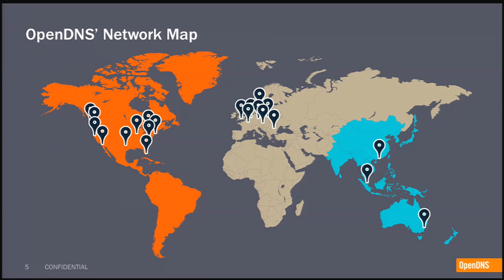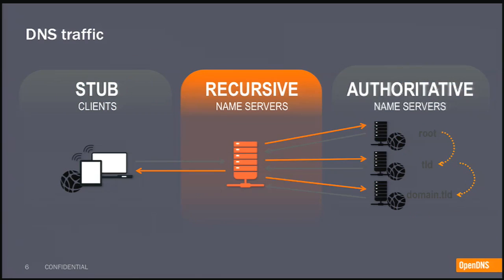OpenDNS has a worldwide presence. We have 23 data centers on four continents. And that allows us to see a lot of DNS traffic. It's mainly recursive and authoritative. So, recursive is between the client and — we sit in the middle and we are a recursive DNS. The clients will ask us the question, what's the IP address of a certain domain? And then we'll talk to the authoritative and give the answers back if there's no caching in our resolvers. This allows us to see the two types of traffic on the Internet.